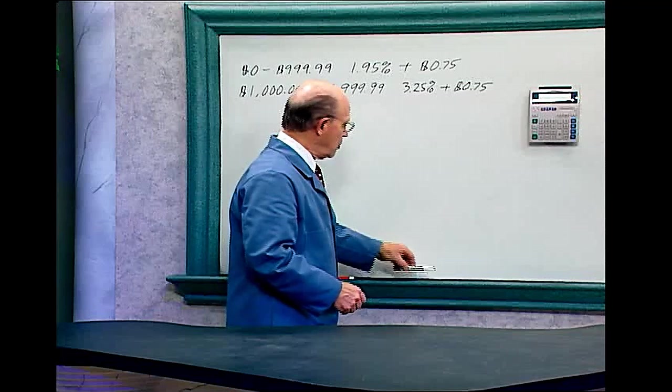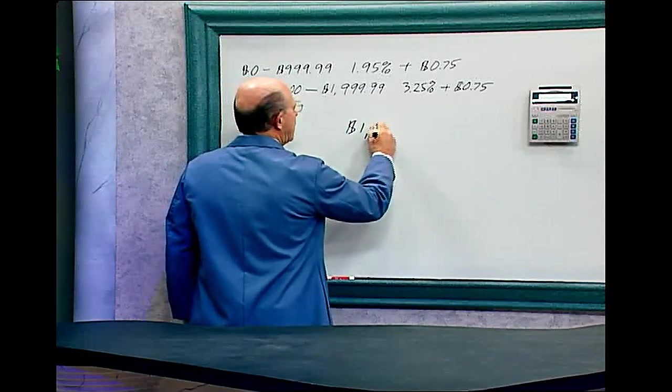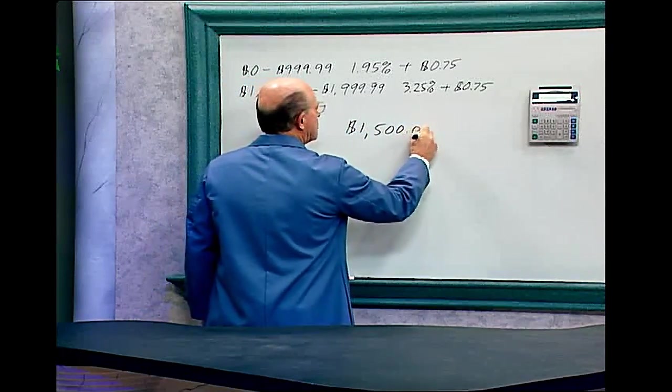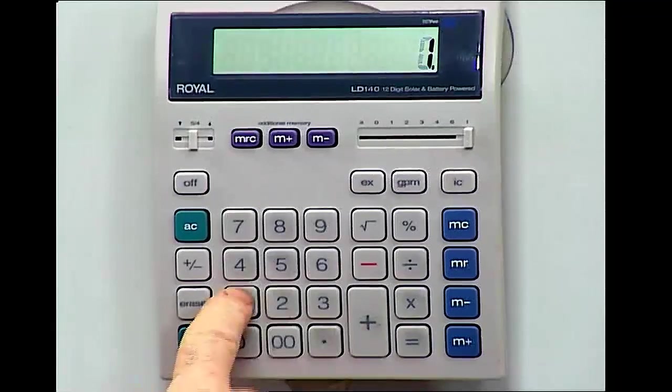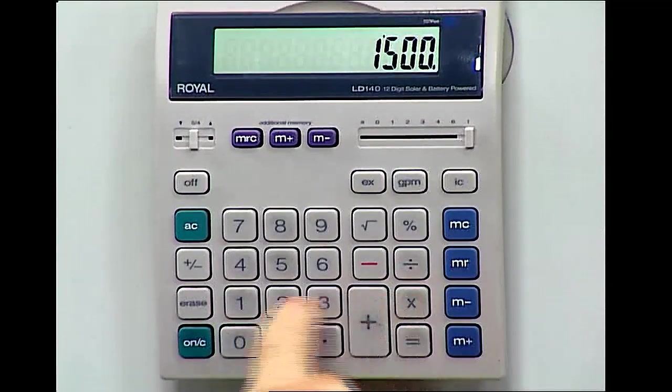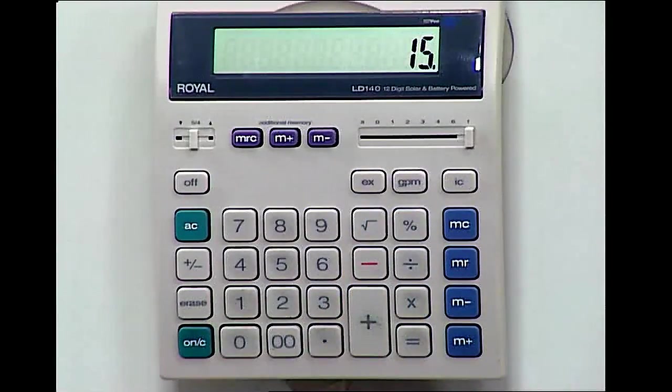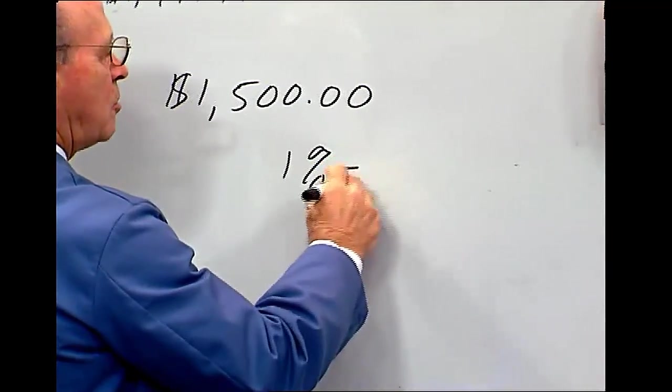Let's do the math. You want to cash a check, $1,500. Now if it was 1%, we could just put that in there. 1,500 times 1% equals $15.